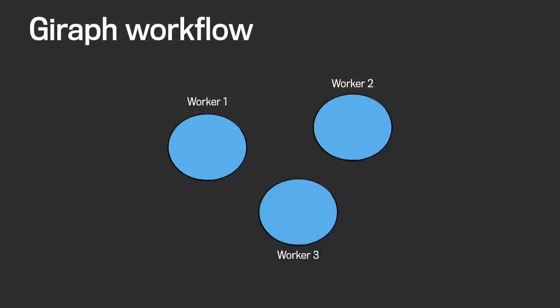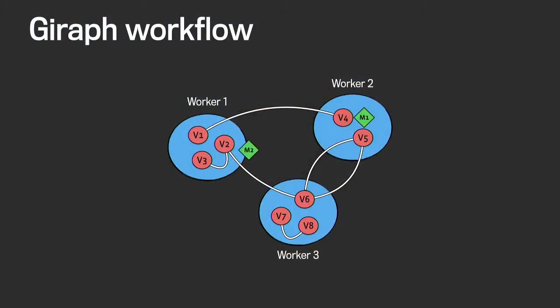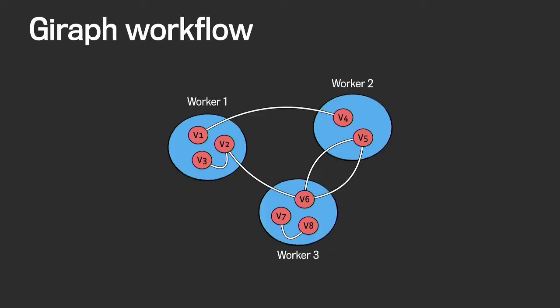A basic overview of the Giraffe workflow: you have a set of machines — we call them workers — and vertices in your graph get automatically distributed across them. A job consists of a certain number of iterations, each called a super step. In each super step, every vertex can do some processing: it can modify its own value, alter the graph, and send messages to other vertices. After every vertex has done its computation, a global barrier ensures all messages from that super step have been delivered, and the next super step starts. Over time we extended this model with many features, and I'll talk about extensions we made specifically for collaborative filtering later.